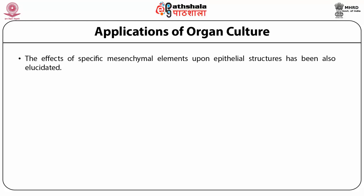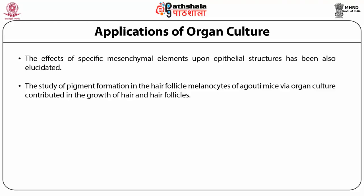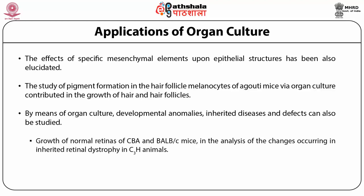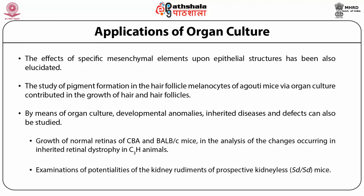The effect of specific mesenchymal elements upon epithelial structure has been elucidated. Organ culture has helped in studying pigment formation in hair follicle melanocytes of agouti mice, contributing to understanding of hair and hair follicle growth. Developmental anomalies, inherited diseases, and defects can also be studied — for example, growth of normal retinas of CBA and BALB/c mice in analysis of changes occurring in inherited retinal dystrophy in C3H animals, and examination of the potential of kidney rudiments in prospective kidney-less mice.